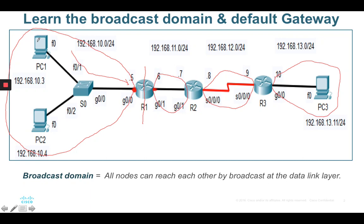Now another example: if I want to route from PC3 to PC1, PC3 is connecting to Router 3. Router 3's directly connected interface is G0/0 with the IP address configured as 192.168.13.10. In this case, PC3 has to configure a default gateway, and the gateway address is 192.168.13.10.